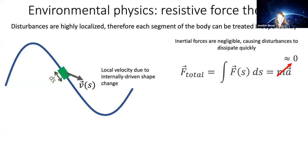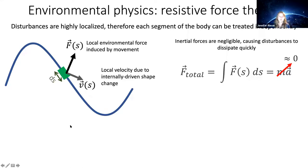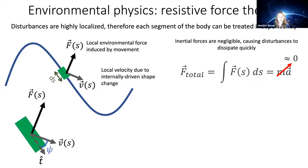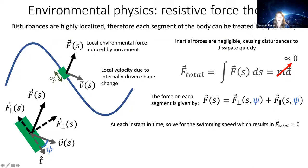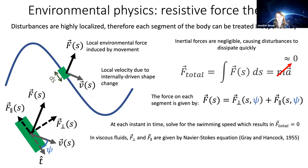In a locomotor, you have a locally driven shape change due to self-deformation of the swimmer, which induces some environmental force. Looking at a particular segment, there is a force perpendicular to the orientation of that segment and a force parallel to it. At every moment in time, the total force is the sum of those two, and we solve for swimming speed by adding them up along the entire body.